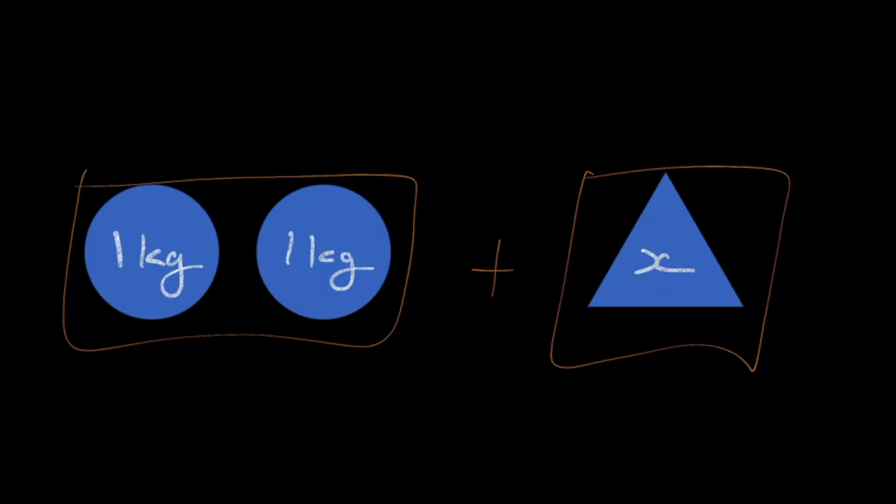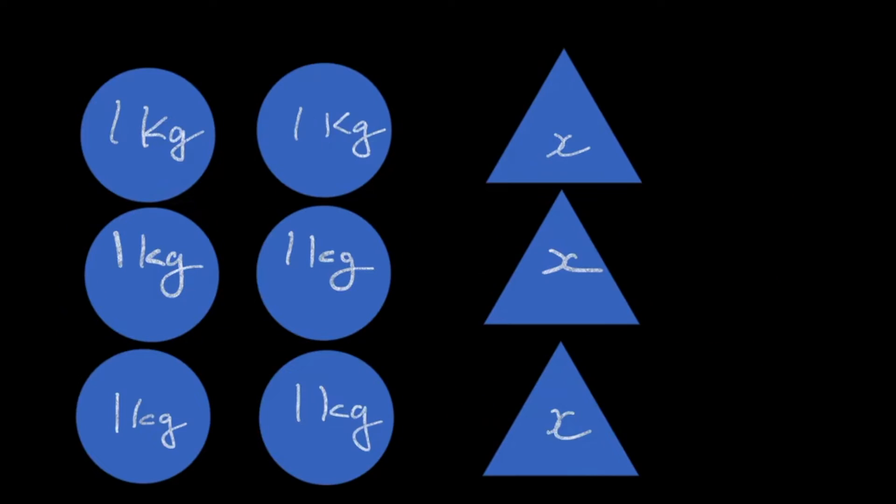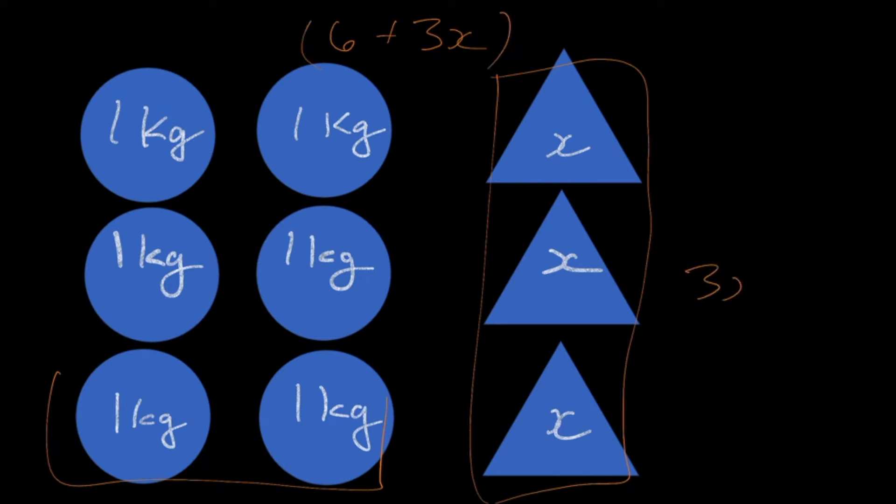So if I was going to write this as an equation, I had two from my circles and my unknown variable. If I was going to then write an expression for what I have here, I now have more. So there's six here, and then I have three unknown variables, so I would have three x, three times x, to find out how much that is.